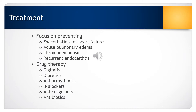Treatment for someone with valvular disease focuses on preventing complications: exacerbations of heart failure, acute pulmonary edema, thromboembolisms, and the possibility of recurrent or new infective endocarditis. Drug therapy will vary depending on the type and extent of the valve disorder, but typical medications include digitalis, diuretics, antidysrhythmics, beta blockers, anticoagulants, and potentially antibiotics.